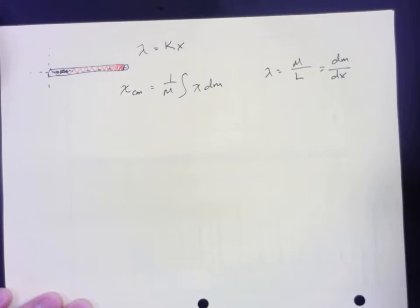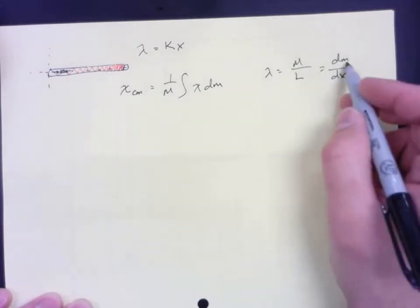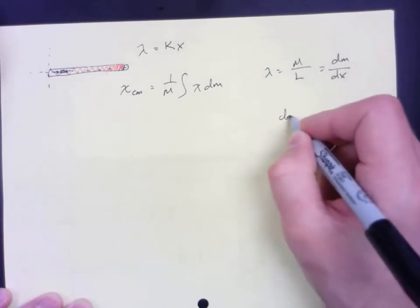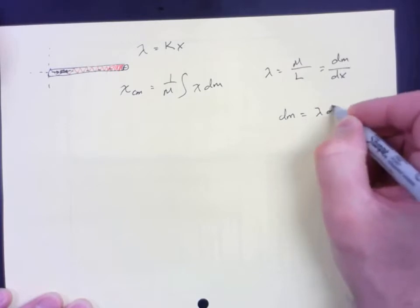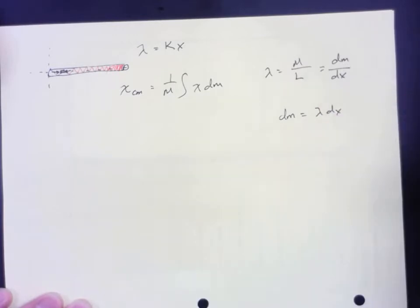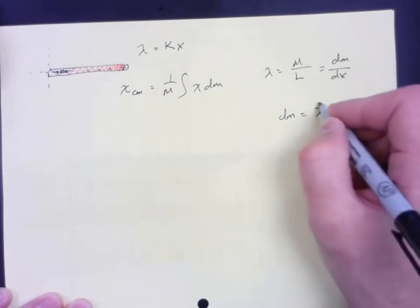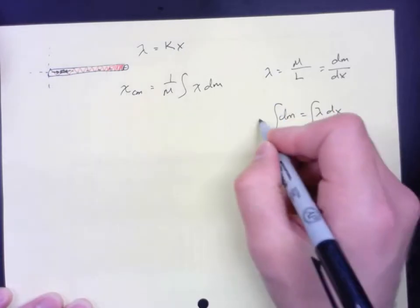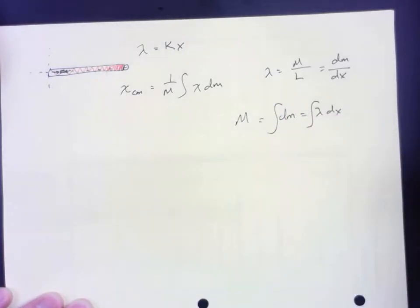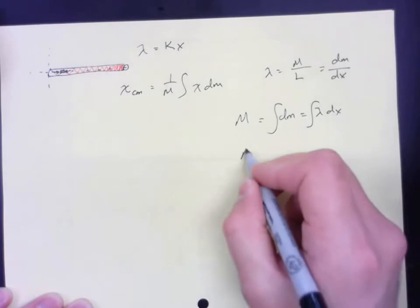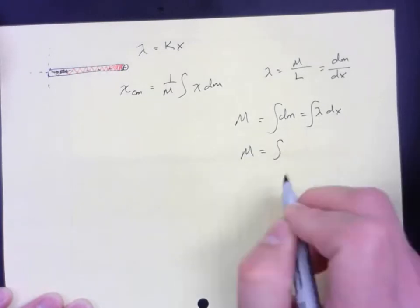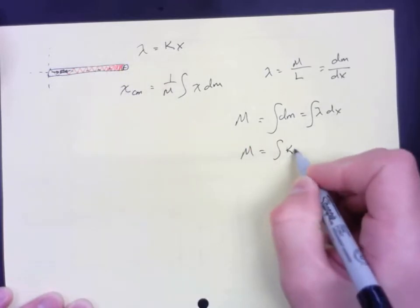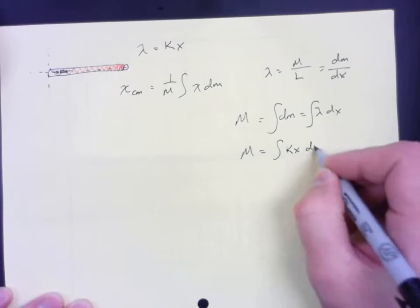It looks like we can figure out what the mass is so that if I rearrange this so that dm is equal to lambda dx, and we take the integral of both sides. If I add up all the little pieces of mass here, I will get a total mass. So the total mass is going to be the integral of lambda dx. But we know that lambda is a function of x, so let's substitute in kx for lambda dx.